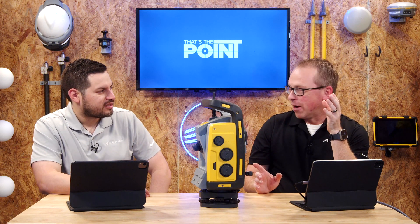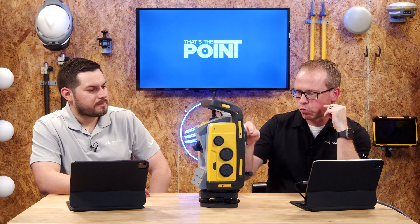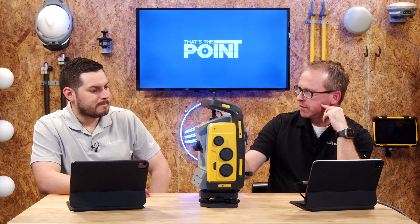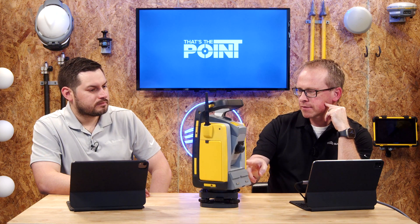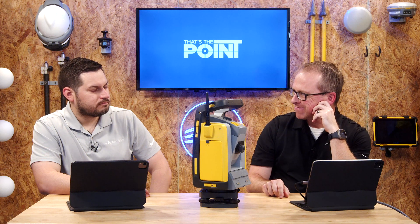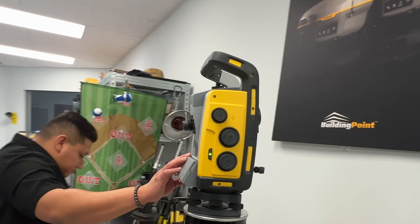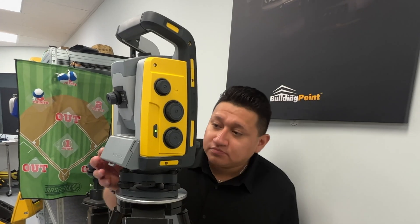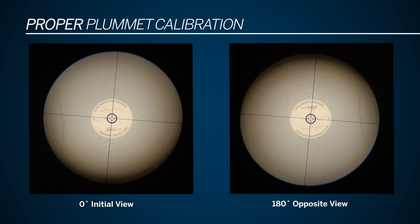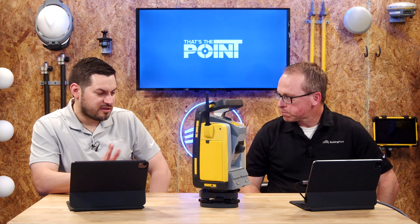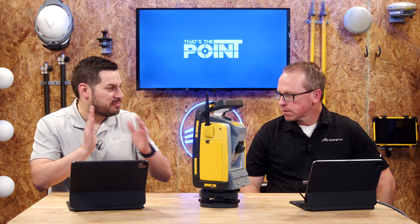Then you do the check. I hope everybody's got their notepads out, because once you verify that you're over that point, you turn it 180° and look at that same point — and that's it, that's as simple as it gets. What you're doing with that 180° check is making sure that point is still exactly in the center of the plummet reticle, which means you are completely set up.